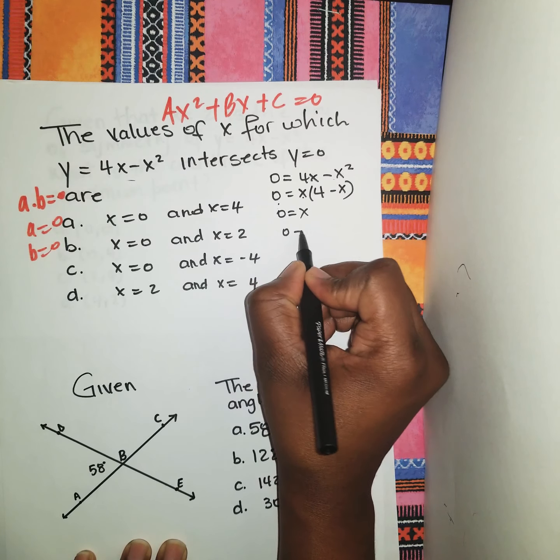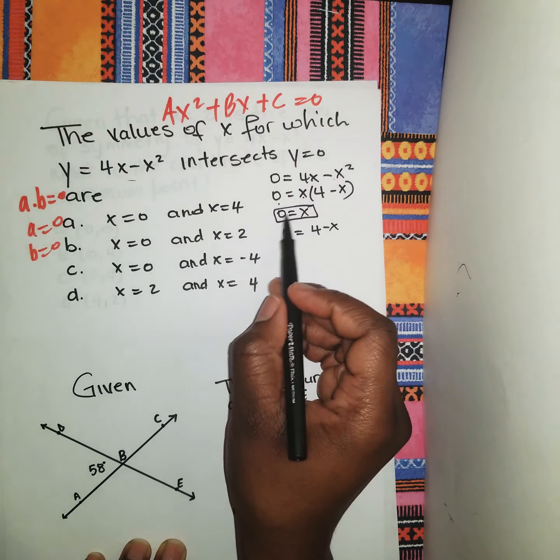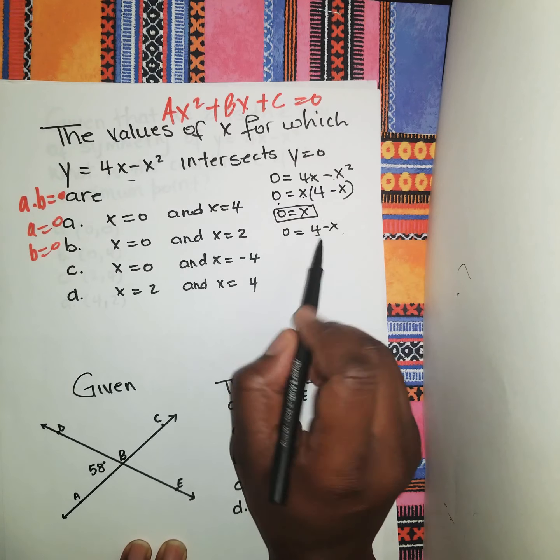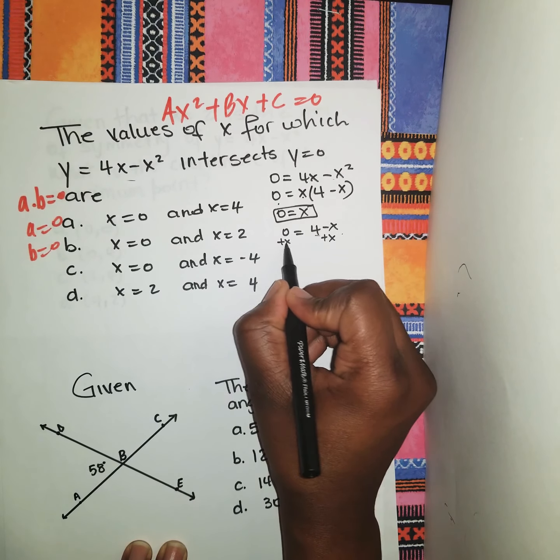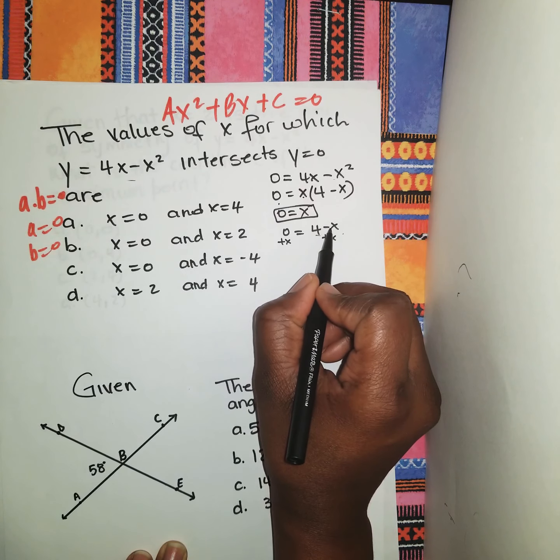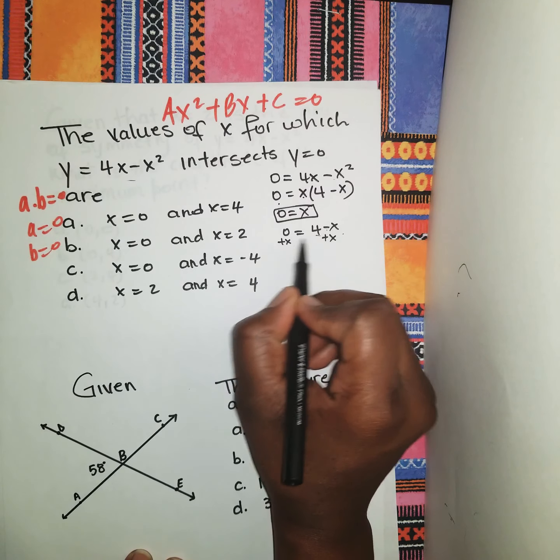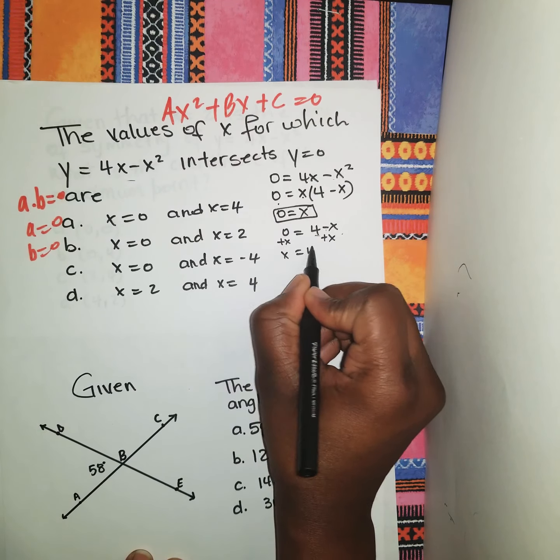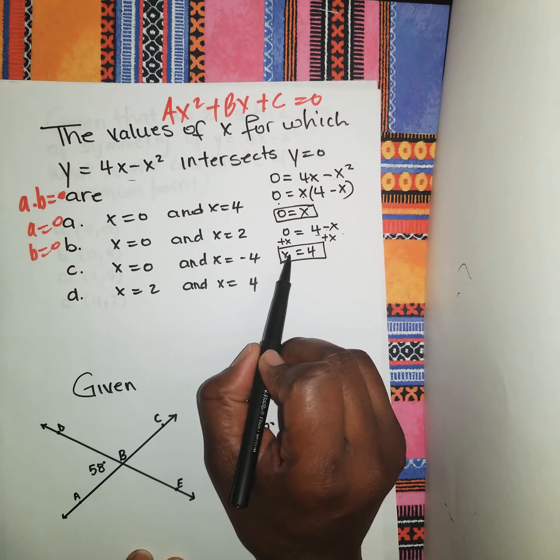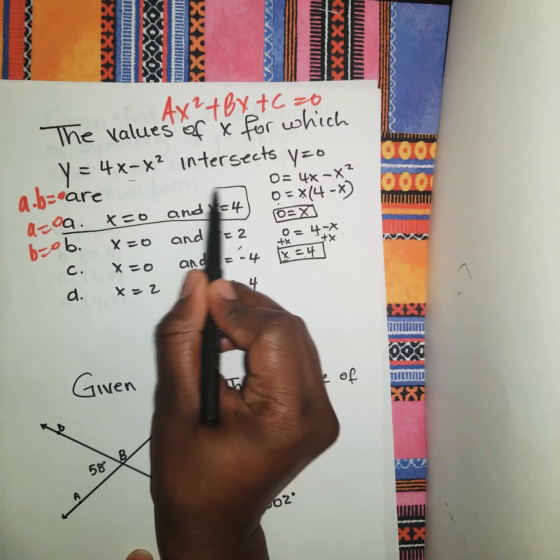So let's move on right here. We're going to equate x to 0 and what's in the bracket to 0. So 0 = x and 0 = 4 - x. Right here we found one solution as x = 0. Let's find this one here. We can add x to both sides. So x = 4.